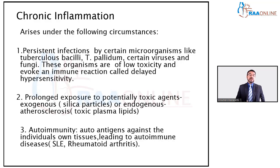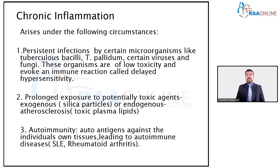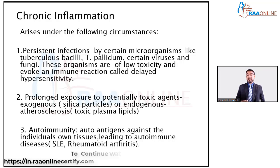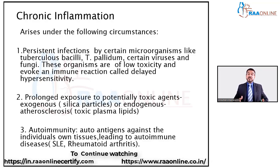A third cause of chronic inflammation is autoimmunity, where autoantigens are produced against our own body tissues. Examples include systemic lupus erythematosus and rheumatoid arthritis, where a person develops antibodies against their own cells — the antibodies then destroy those cells. These are aspects of chronic inflammation that take months and years to develop.